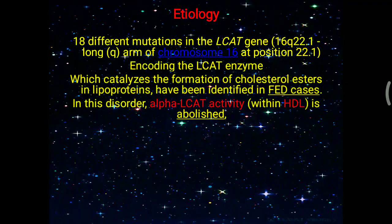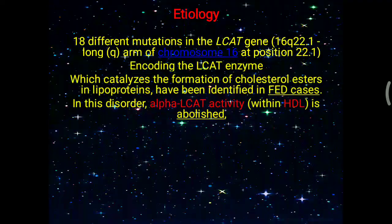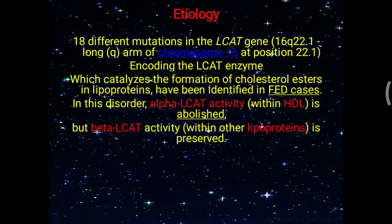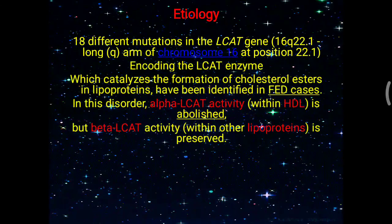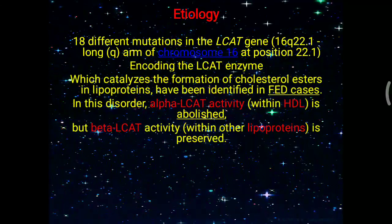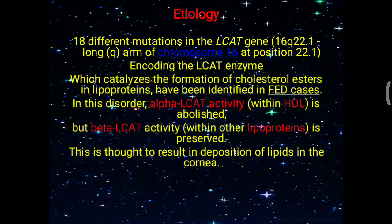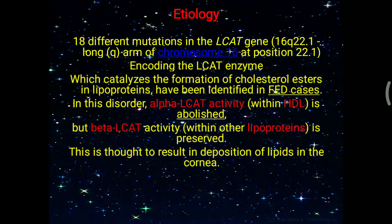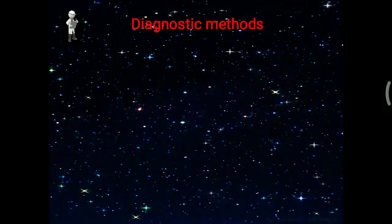Alpha LCAT activity is predominantly associated with HDL, and this alpha activity is abolished in Fish-Eye disease. Beta LCAT activity is found in other lipoproteins and is preserved in Fish-Eye disease. This selective loss of alpha LCAT activity is thought to result in the deposition of lipid in the cornea.